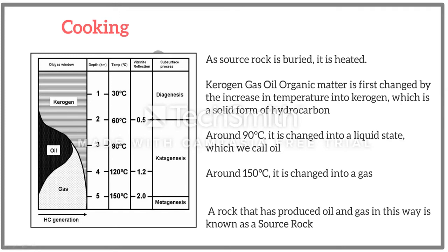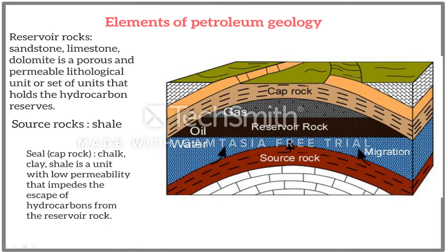The elements of petroleum geology. Reservoir rock is a porous and permeable geological unit — a set of units that hold the hydrocarbon reserves. Reservoir rocks include sandstone, limestone and dolomite. Seals are units with low permeability that impede the escape of hydrocarbons from the reservoir rocks. Seal rocks include clay, shale and chalk.